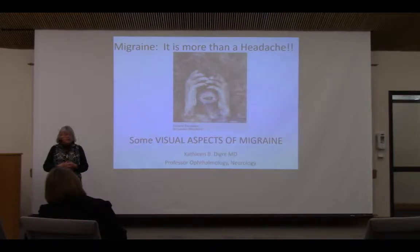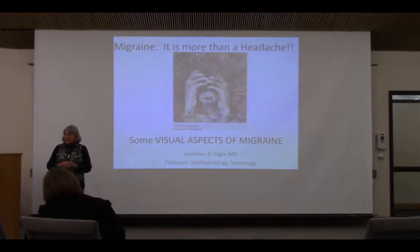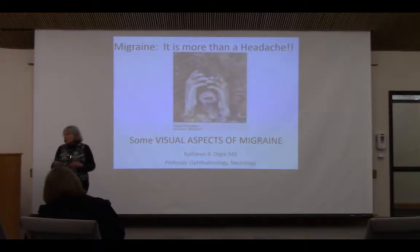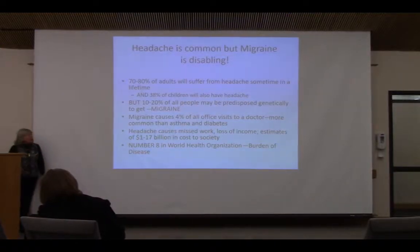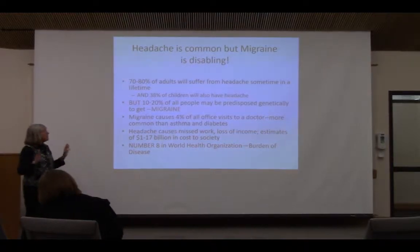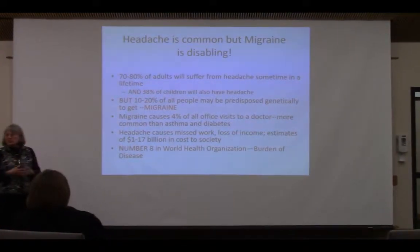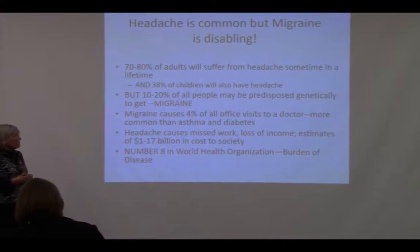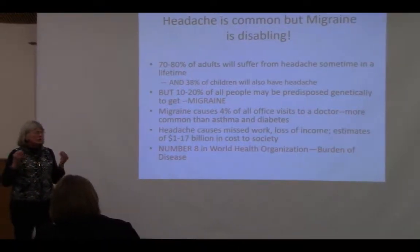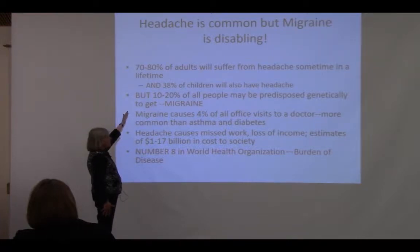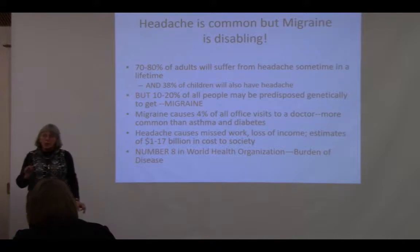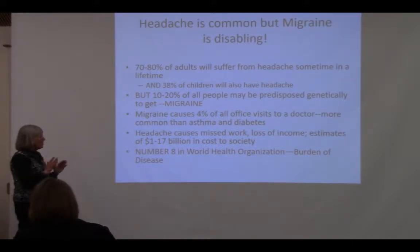I want to convince you that migraine is more than a headache. The headache is the part that disables us, but there are visual aspects that each of us who has migraine can experience. Migraine is extremely common — almost all adults will have a headache sometime in their life, and 38% of children can have headaches at any one time. About 10 to 20% of people are predisposed to get migraine headaches, and of those, about a third get auras.